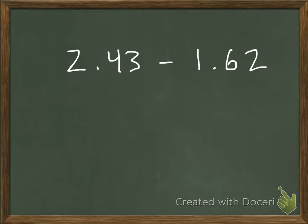Now I want you to try this one on your own: 2 and 43 hundredths minus 1 and 62 hundredths. Using base 10 blocks, try to solve this. Press the pause button, and when you've solved the problem, press play to see if you solved it properly.